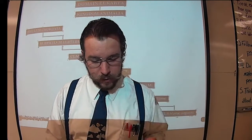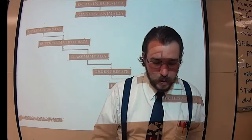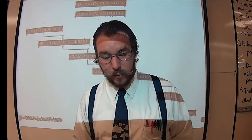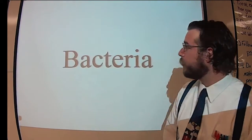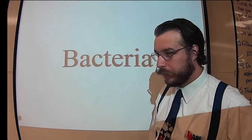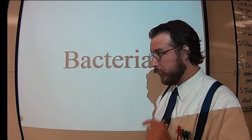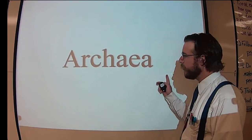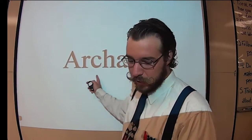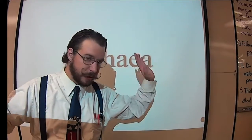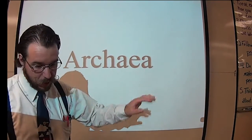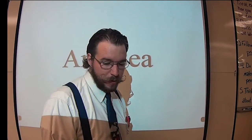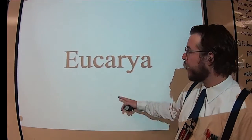Instead of the six kingdoms, we have three domains. Here are the three domains: domain Bacteria, which has kingdom Eubacteria in it. Domain Archaea — and what do you think goes there? That would be Archaeabacteria. And then you have domain Eukarya.